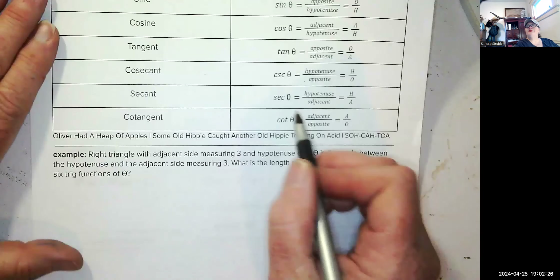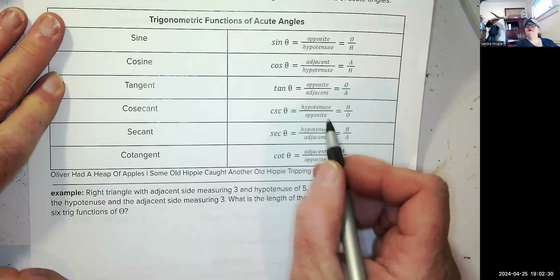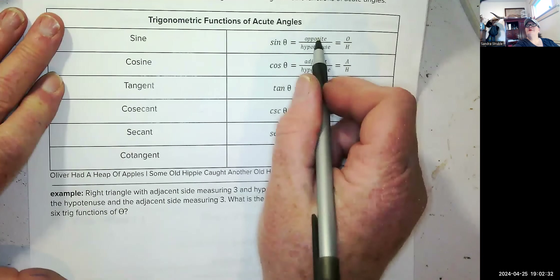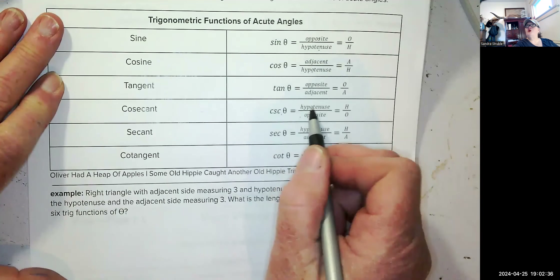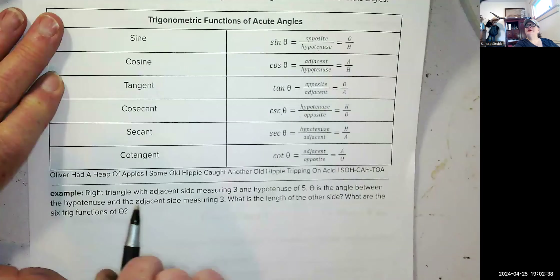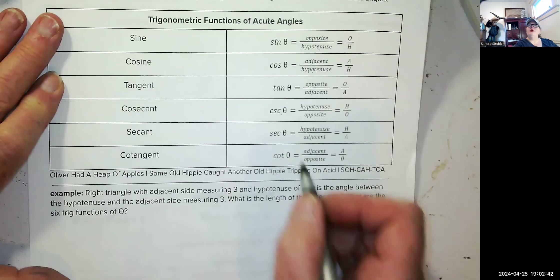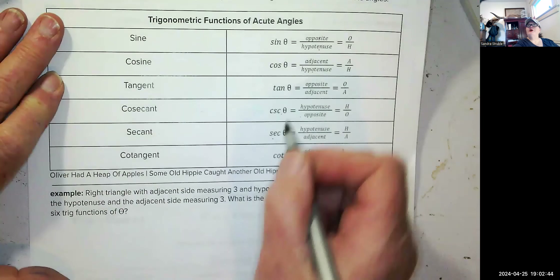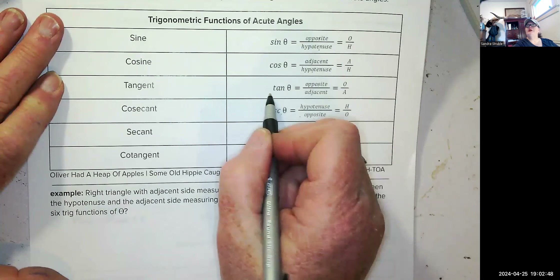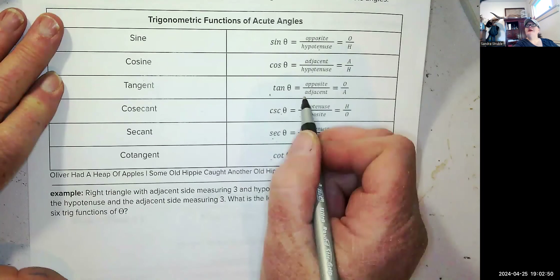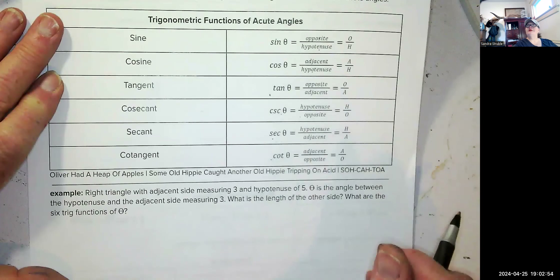Cosecant is hypotenuse over opposite. Secant is hypotenuse over adjacent. Notice: if sine is opposite over hypotenuse, cosecant is its reciprocal — hypotenuse over opposite. Cosine, adjacent over hypotenuse, and secant is the reciprocal of cosine — hypotenuse over adjacent. And tangent and cotangent are reciprocals: tangent is opposite over adjacent and cotangent is adjacent over opposite.